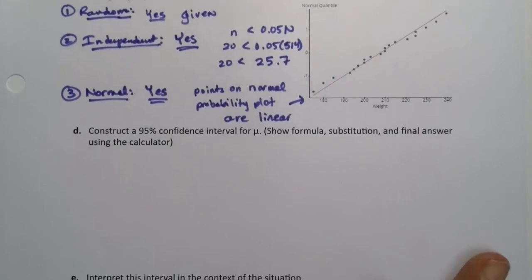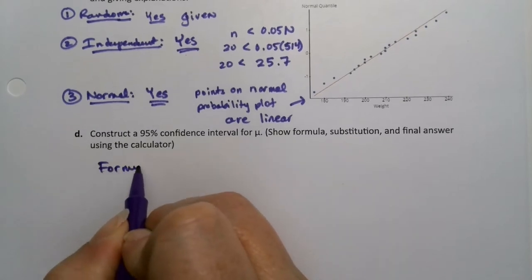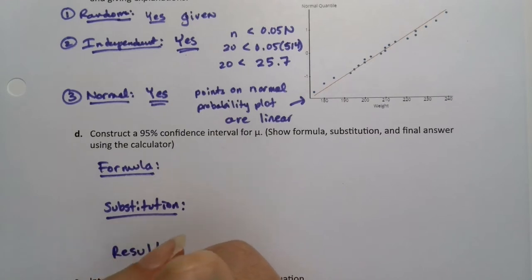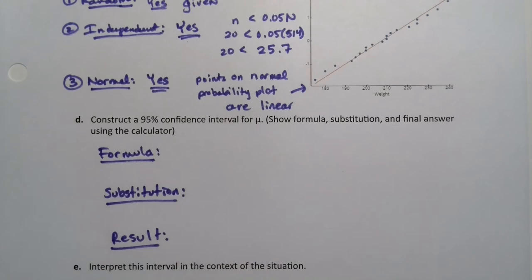That means we are go for the next bit which is the formula, substitution, and result. Right, where all the work is. So the formula, well the formula was on the previous page. It hasn't changed because we're still doing a confidence interval for a mean. It's also on your exam notes packet. Just as before in 9.1 there's no need to memorize it.